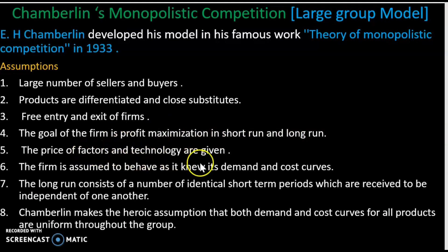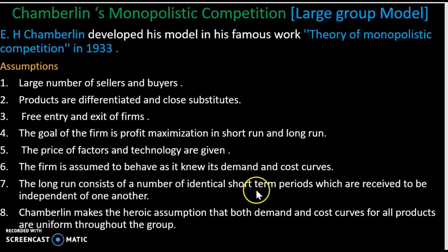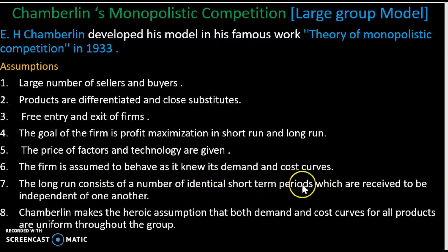Price of factors and technology are given. Sixth assumption: each firm behaves as if its own demand and cost are independent. One firm behaves in the market assuming its demand and cost are unaffected. Seventh assumption: the long run consists of a number of identical short-term periods which are assumed to be independent of one another.